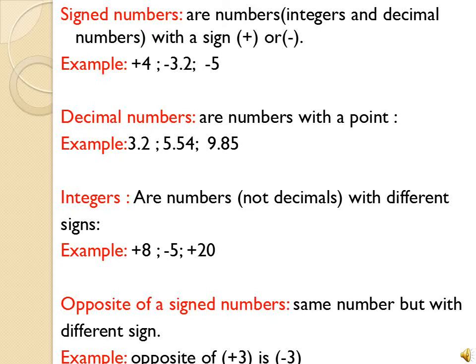Now what are integers? Integers are numbers — not decimals — with different signs. يعني الانتجر مستحيل يكون في بقلبه a point, ممنوع يكون في بقلبه decimal point. They can be positive or negative, بس ممنوع يكونوا decimal point. They are natural numbers. Like: plus 8, minus 5, plus 20, plus 100, plus 205. على الشرط أنه ما يكون فيه بقلبهم decimal point, لأنه مجرد مرة يصير فيه بقلبهم decimal point صار اسمه decimal number.